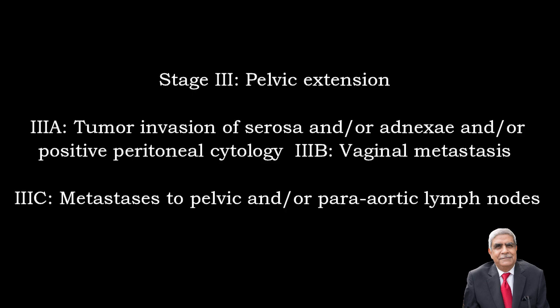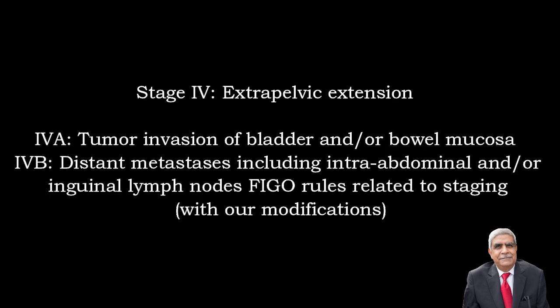Stage 3 is pelvic extension. Stage 3a — tumor invasion of the serosa or adnexa, or positive peritoneal cytology. Stage 3b — vaginal metastasis. Stage 3c — metastasis to pelvic and paraaortic lymph nodes. Stage 4 is extrapelvic extension. Stage 4a — tumor invasion of the bladder and mucosa of the bowel wall. Stage 4b — distant metastasis including intra-abdominal or inguinal lymph nodes.